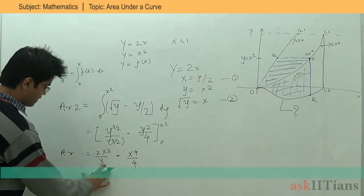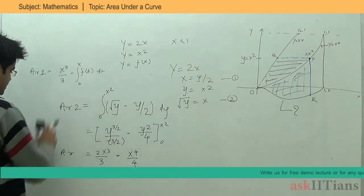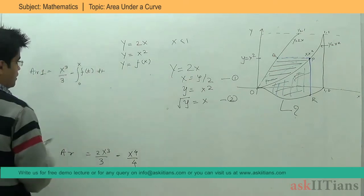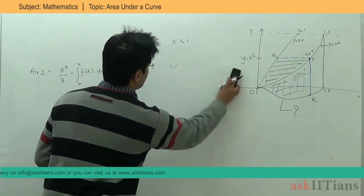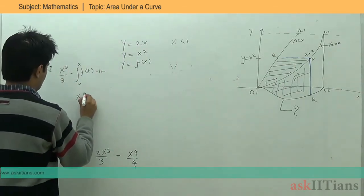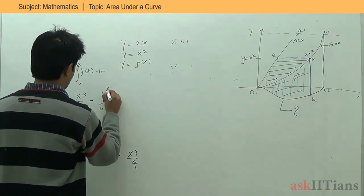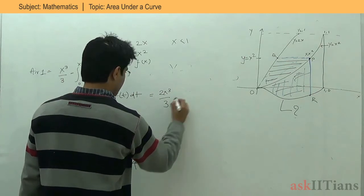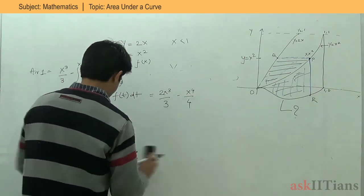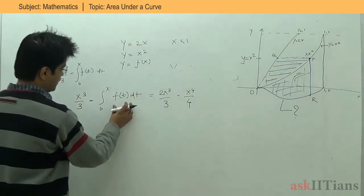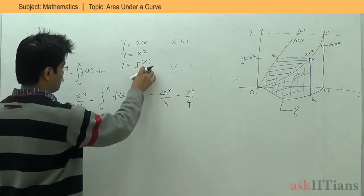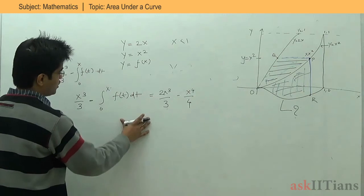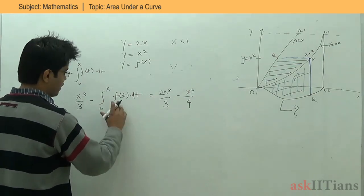Now we have both areas. As the condition states, Area 1 equals Area 2. So: X cubed by 3 minus the integral from 0 to X of F(T) dT equals 2X cubed by 3 minus X to the power 4 by 4. This function F(X) still remains in integral form. To find F(X), we differentiate the whole equation so that the integration and differentiation cancel out.